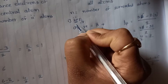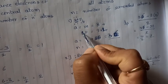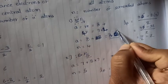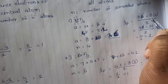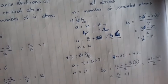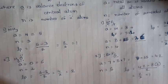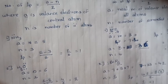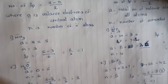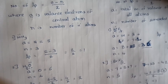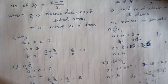To recap: for XeF₄, four fluorines contribute 28 electrons, plus 8 from xenon gives 36. 36 minus 32 gives 4, divided by 2 gives 2 lone pairs. By using these two formulas, you can calculate the number of lone pairs present on the central atom in any type of molecule. Hope you understood this topic — thank you for watching, please subscribe to my channel.